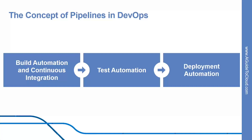The stage may involve different types of automated or, initially at least, manual activities. The third stage is deployment automation.